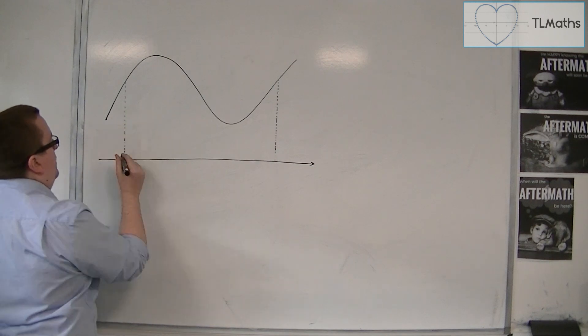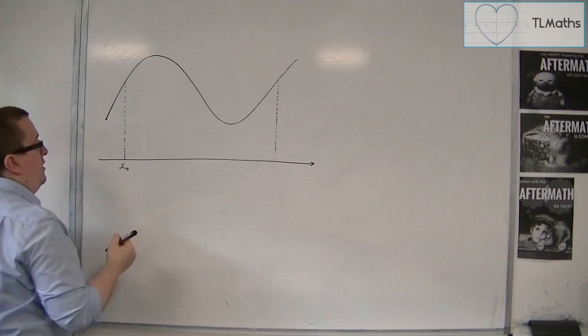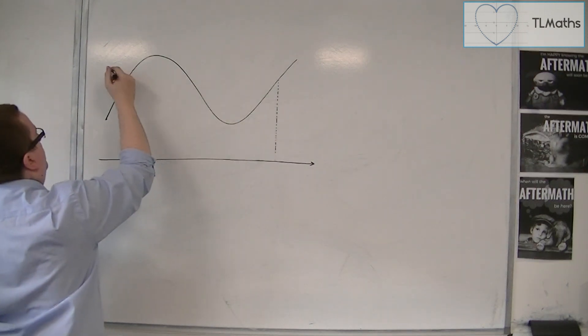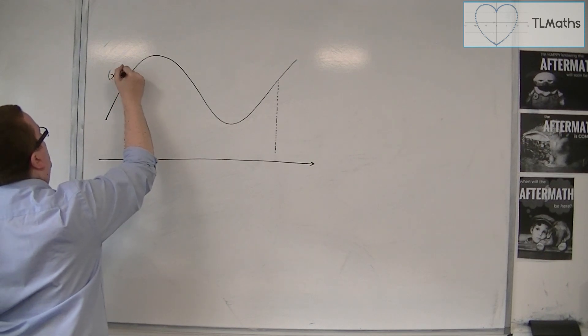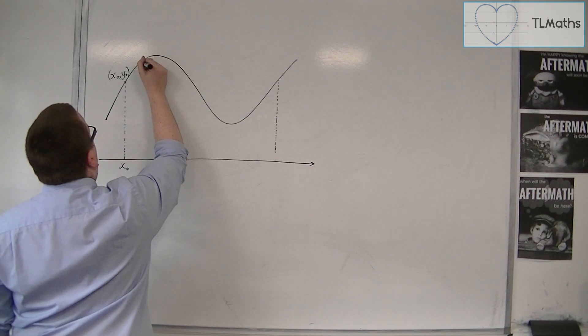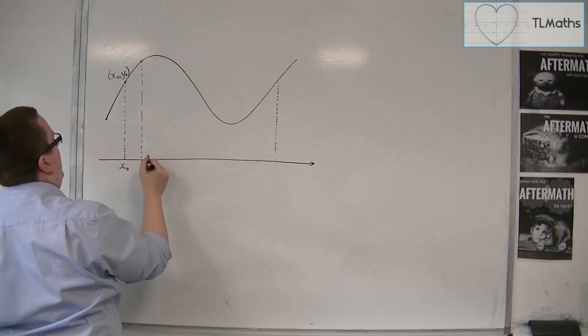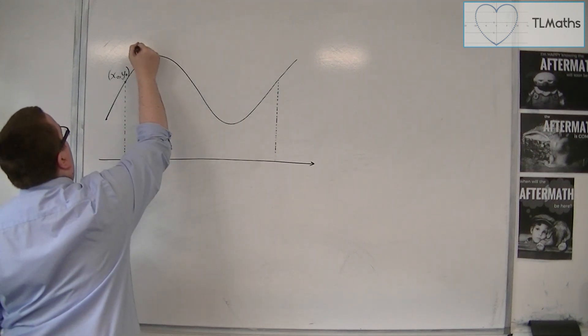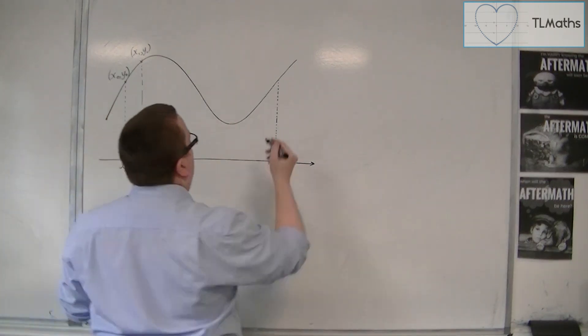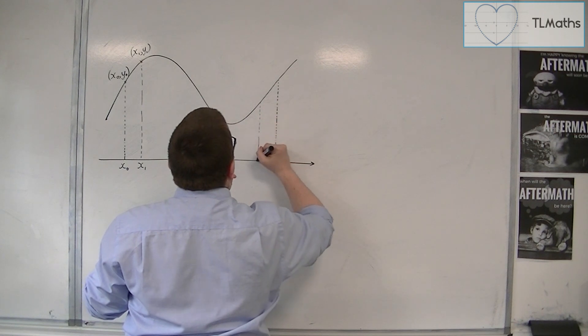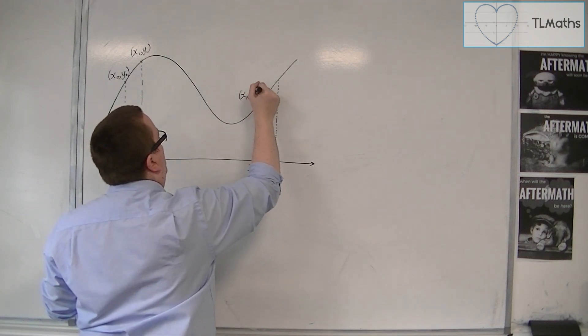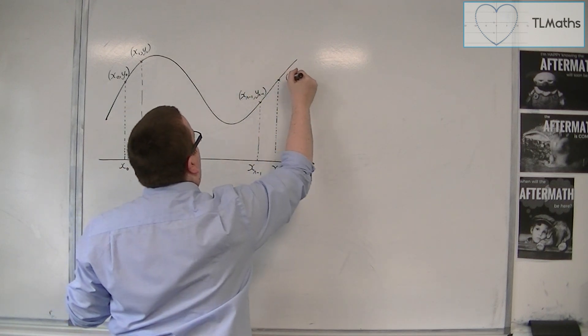So we would start off with this initial x value. Let's call it x0. And so each point along the x-axis will have a respective y-coordinate, and we can call this one y0. So let's call that x0, y0. And then you're going to have another point further along the curve, which will have an x-coordinate of x1. And let's say that that's x1, y1. And then I'd have x2, x3, x4, all the way up to, eventually, I would have xn and xn-1. So this point would be xn-1, yn-1. And this point would be xn, yn.